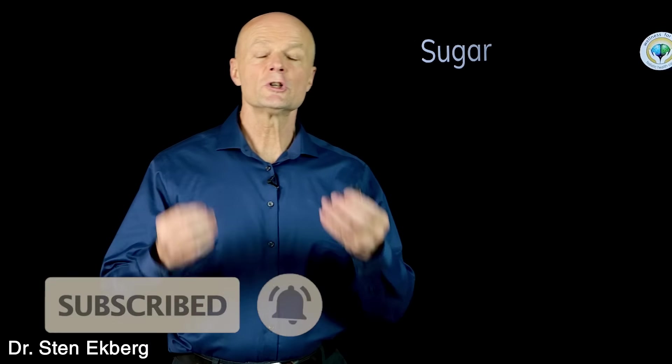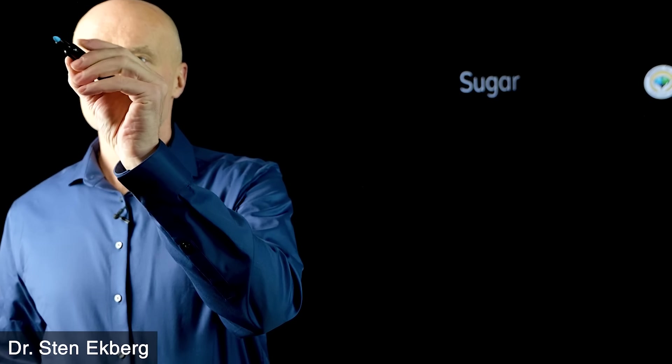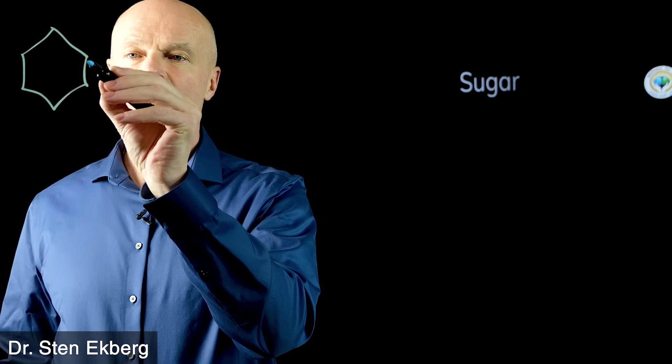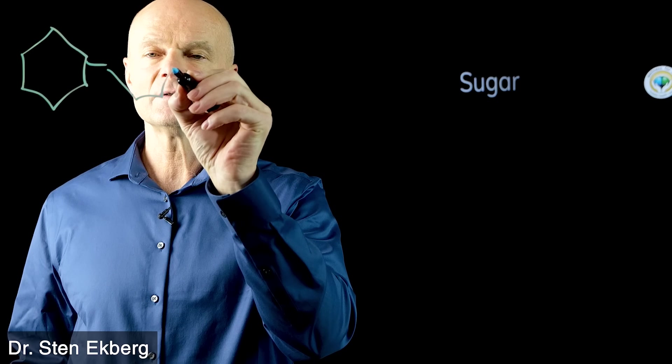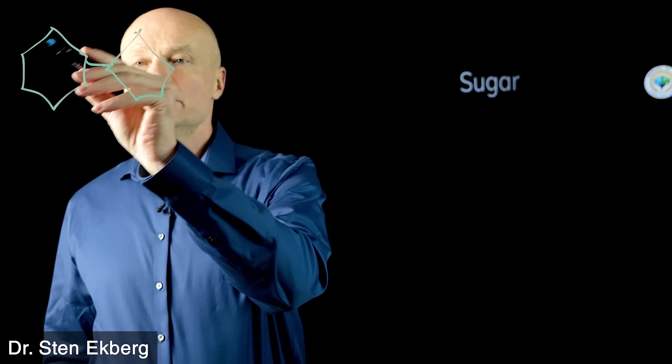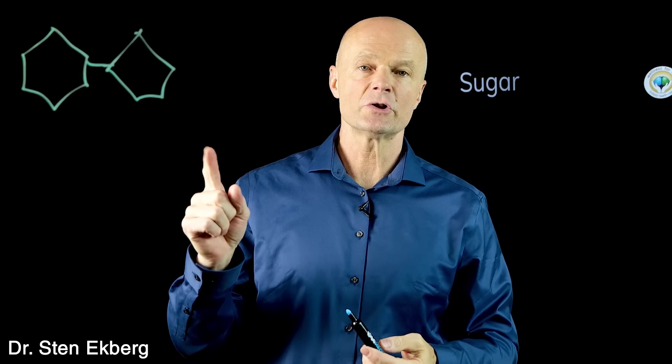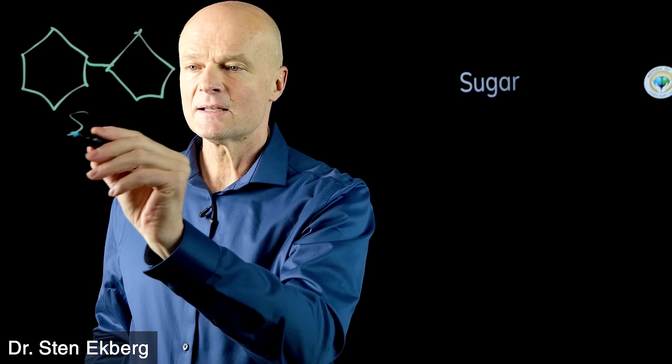We need to understand what sugar is and what types to avoid. When we say cut out sugar for 30 days, what does that mean? Typically we're talking about sucrose, table sugar, which is a six-carbon ring combined. If you've seen my videos you may have seen this, but people still don't understand these basics. Glucose by itself is a monosaccharide, a single sugar. Sucrose is a disaccharide, meaning two sugars.